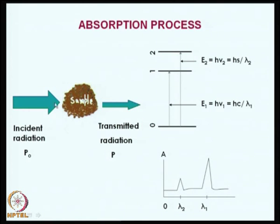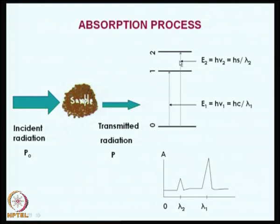In absorption, incident radiation falls on the sample, part of it is transmitted and part is absorbed. You would see the spectrum, where the bottom is the basic ground state, above that is excited state 1, then excited state 2. The electron can get excited from the ground state to the first excited state corresponding to hc/λ₁, or from the ground state it can go up to the second, third, or fourth excited state. These notations are only theoretical — a pictorial representation of what is happening.